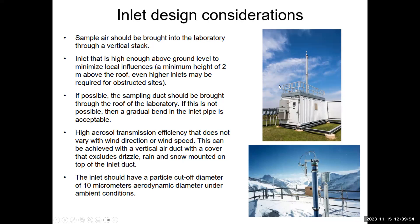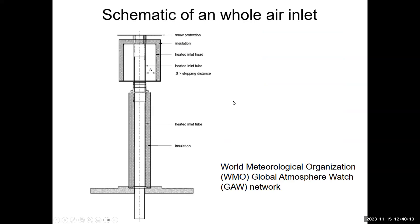Inlets should have a particle cutoff diameter of 10 micrometers aerodynamic size under ambient conditions — sampling PM10 as the standard for measuring total particle mass. Here is a design of a vertical sampling inlet: snow protection is at the top, aerosols are withdrawn from the bottom, and they go through two bends before entering the tube. The bend acts as a size cut. You also need to ensure that the gap S is larger than the stopping distance of the particles you want to sample — for example, for 2.5 micrometer particles, S must exceed their stopping distance.